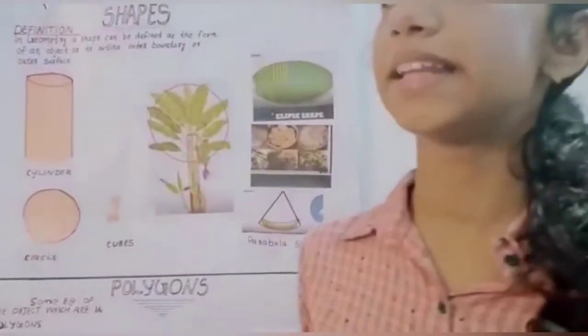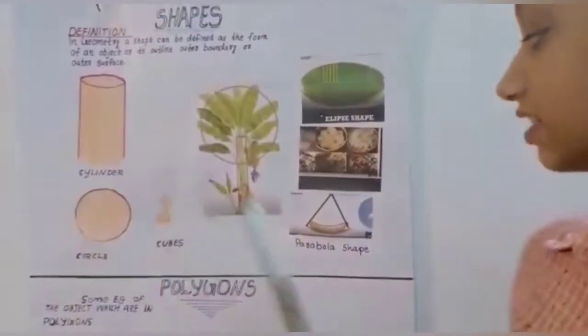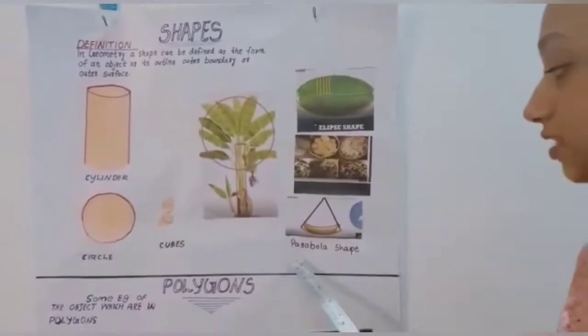I think you all have seen banana tree's fruit. It appears in a curved shape. That shape is not just curved. That shape is known as parabola shape.